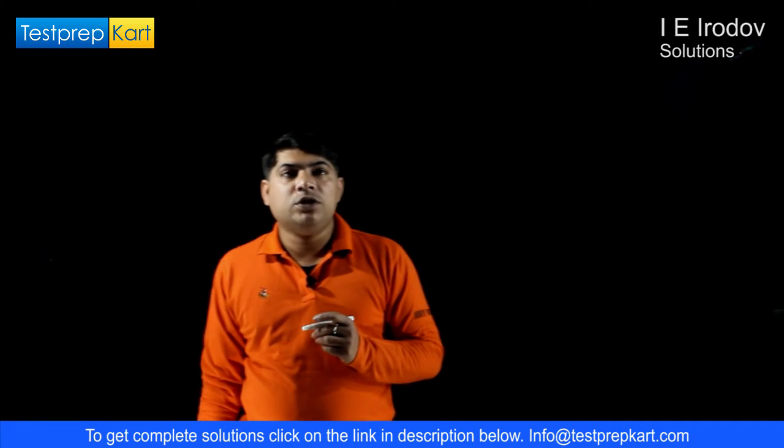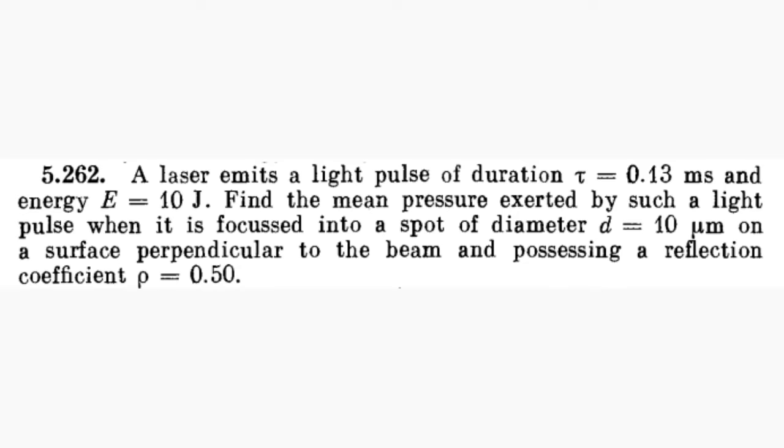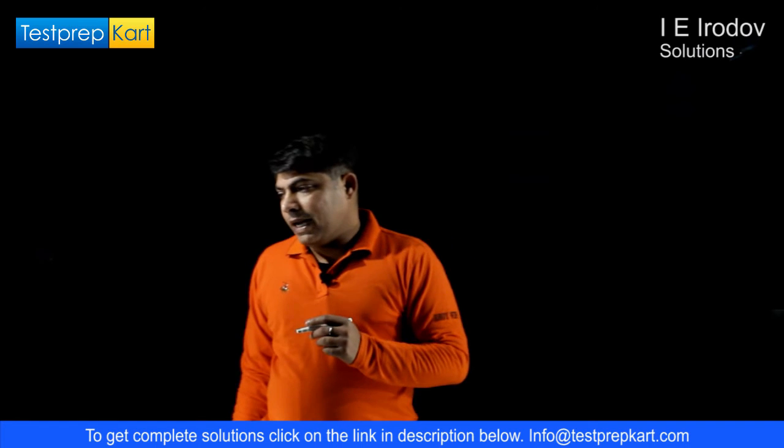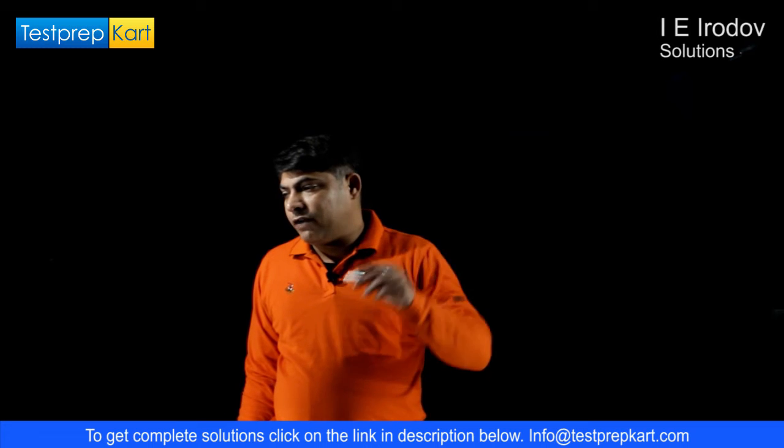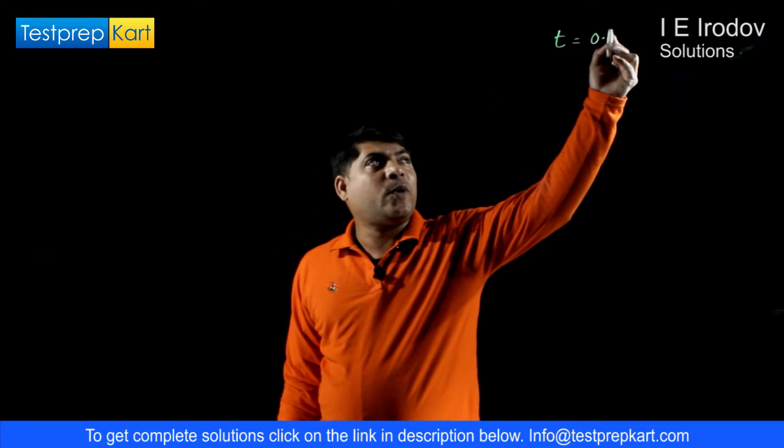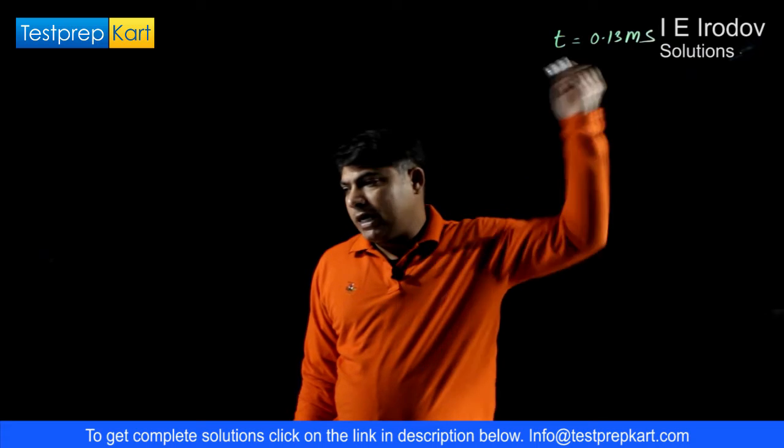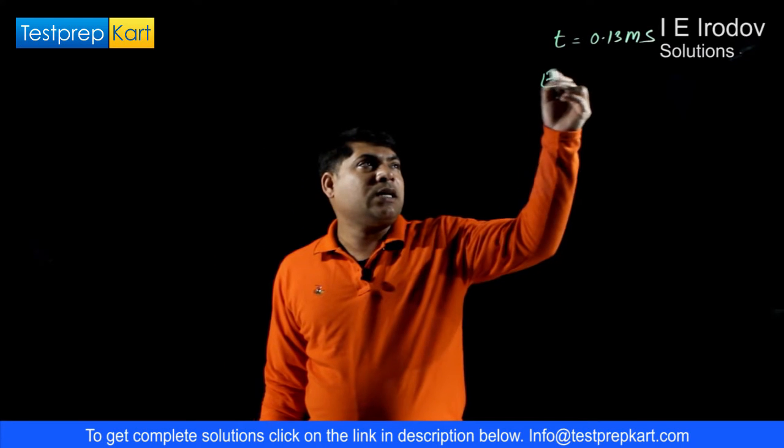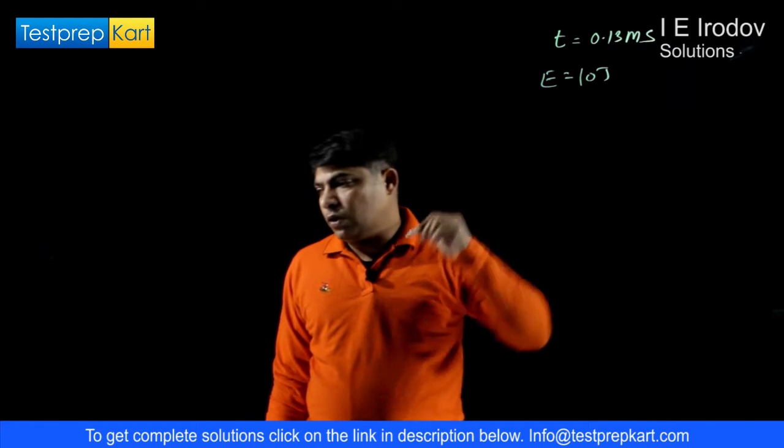Question number 5.262. A laser emits a light of duration tau equals 0.13 millisecond and its energy E equals 10 joules.